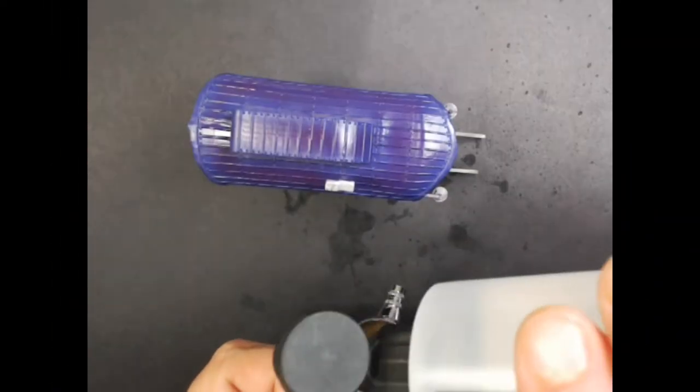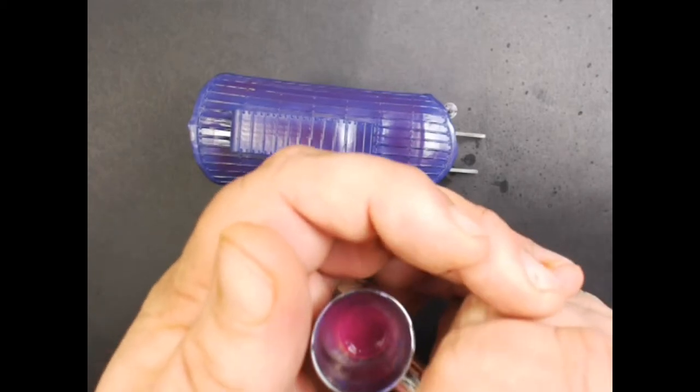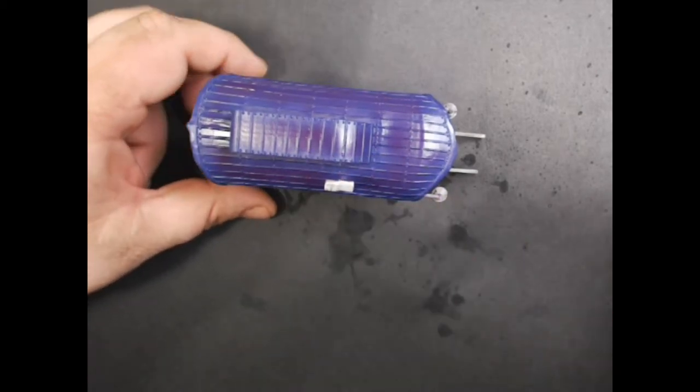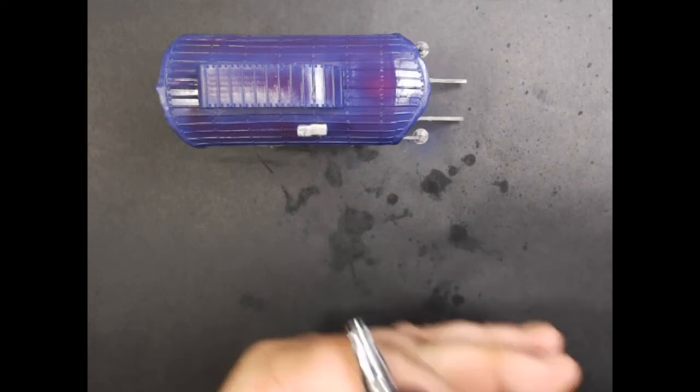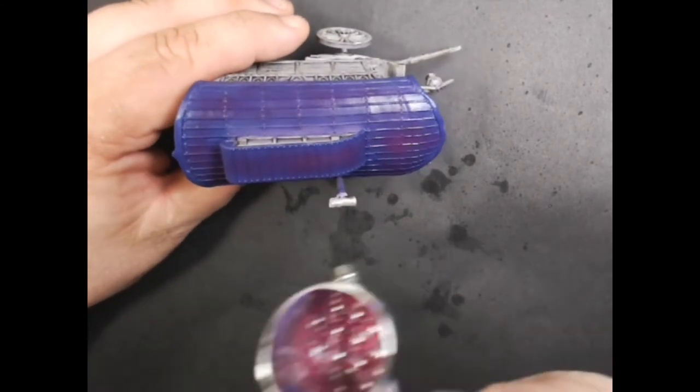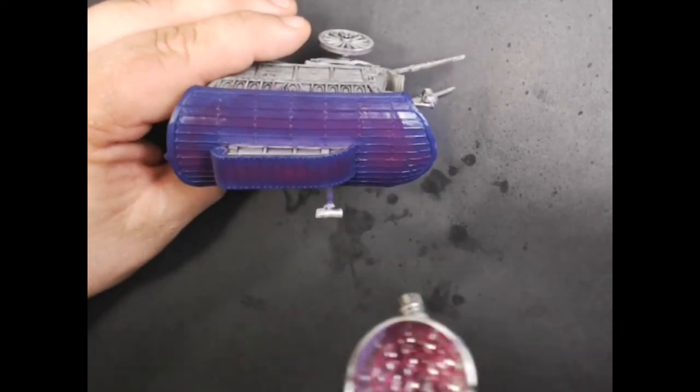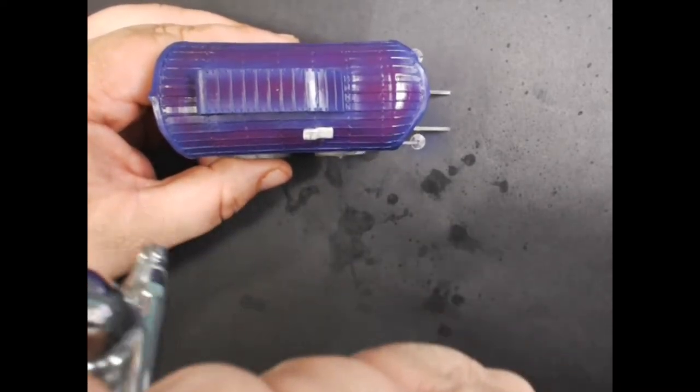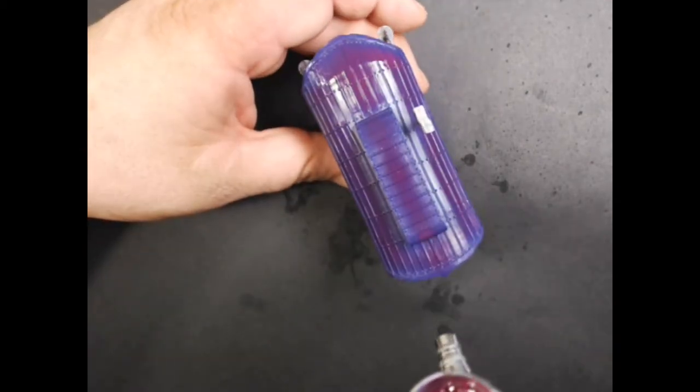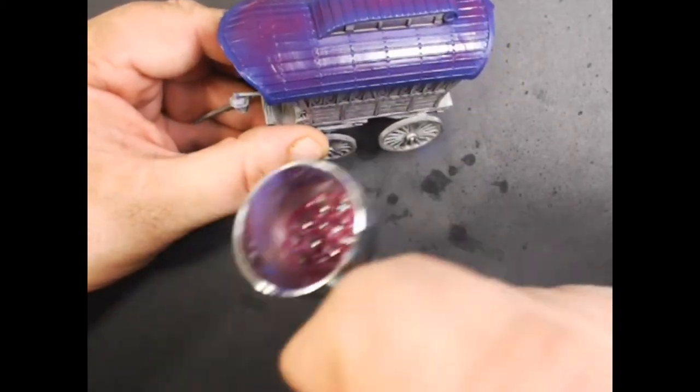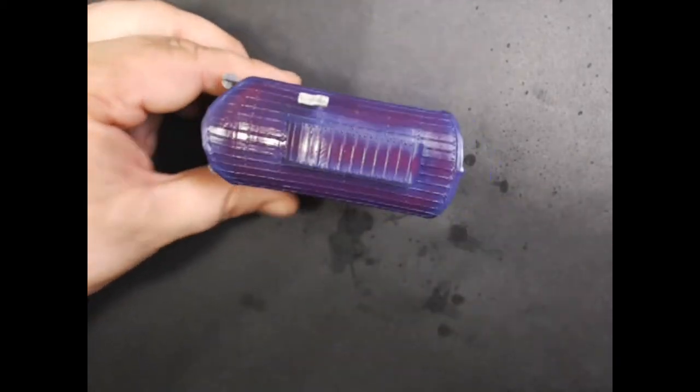Now we're just doing straight Vallejo Model Color Violet Red. So I washed out the airbrush and now we're just using the straight violet red. As you can see the color is much more intense now. Notice how I'm leaving the dark purple around the edges.